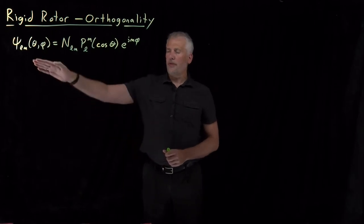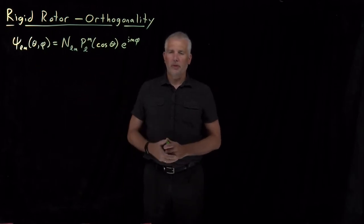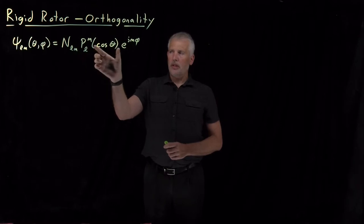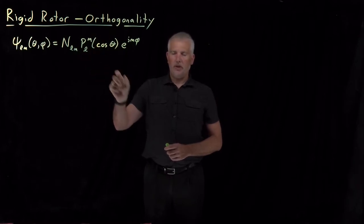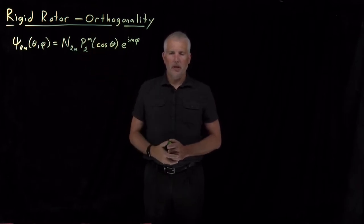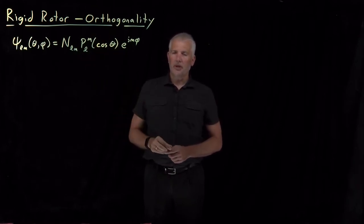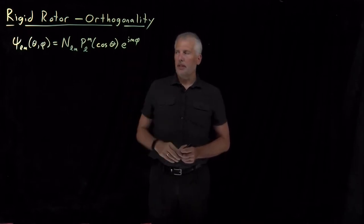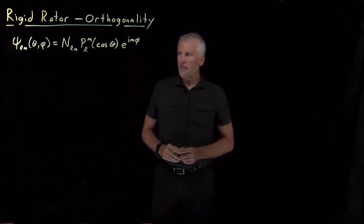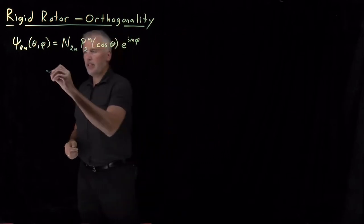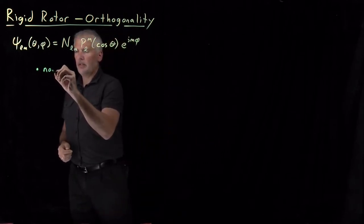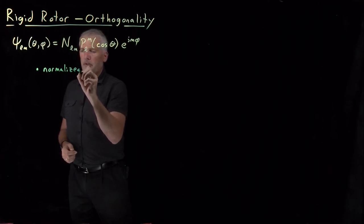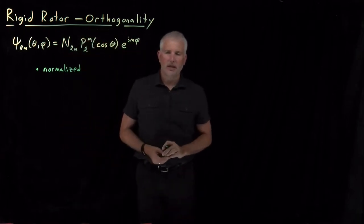Our wave functions for the rigid rotor take this form: a normalization constant, a polynomial in cosine of theta related to the Legendre or associated Legendre polynomials, and then an exponential term involving phi that is complex. Those wave functions are normalized, or at least we can choose the value of N to guarantee that they're normalized.